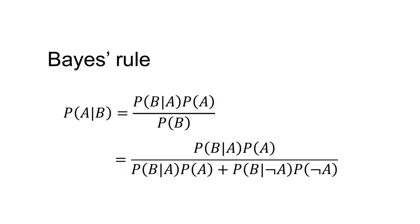So we can now write Bayes' rule as follows: the probability of A given B equals the probability of B given A times the probability of A, divided by the probability of B given A times the probability of A, plus the probability of B given not-A times the probability of not-A.